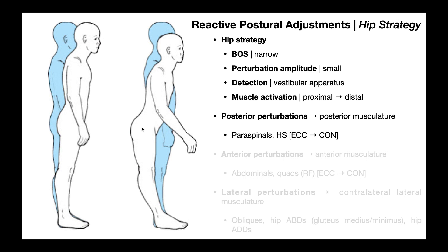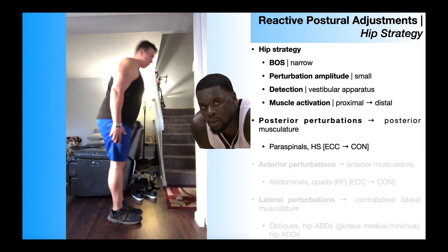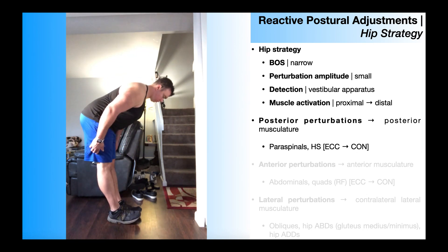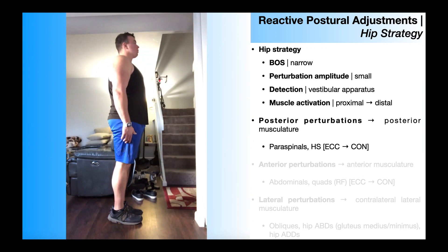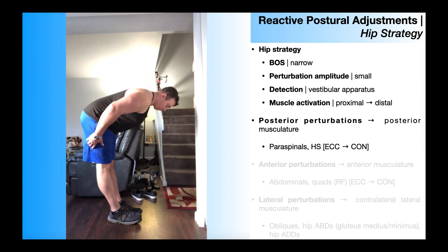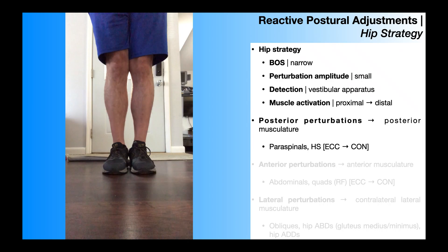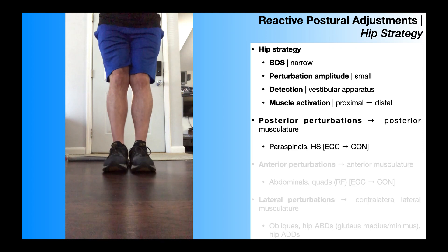Once the movement is slowed to zero, those muscles contract concentrically to bring the center of gravity back forward and ultimately the person back to their starting position, shown there in blue. To summarize: a hip strategy induced by a posterior directed perturbation causes the center of gravity to shift posteriorly; the paraspinals and hamstrings contract eccentrically to slow it down, then concentrically to bring the center of gravity back forward. The feet are together because in order to induce a hip strategy, the base of support should be narrow.